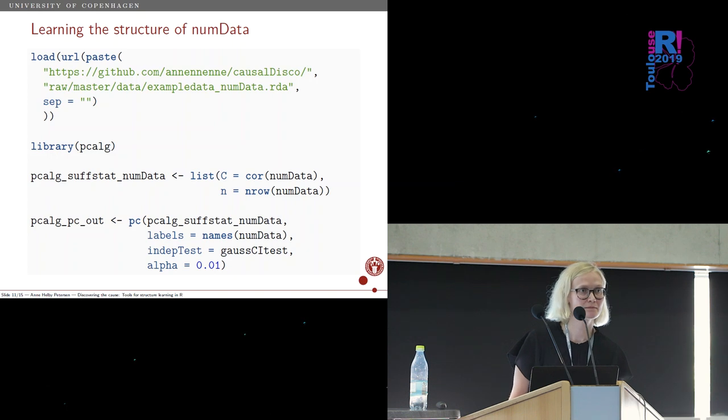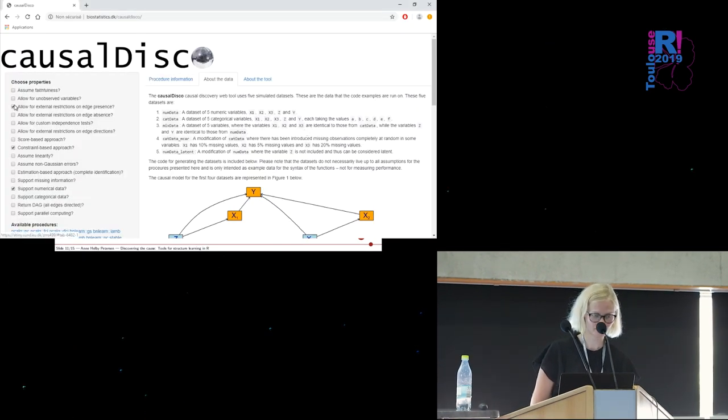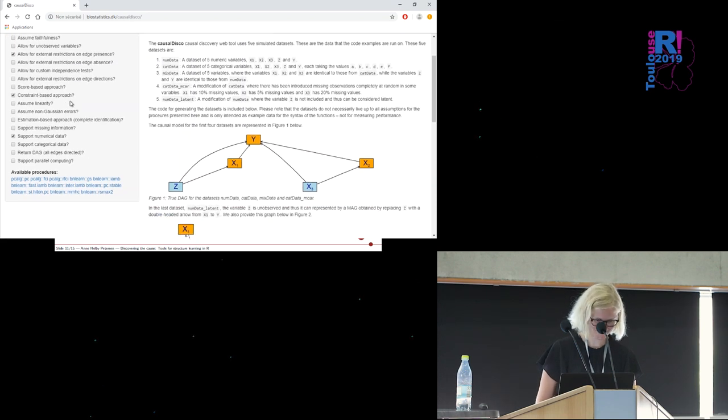And is it possible to add some expert knowledge, for instance, like in saying that this relationship is in that way? Yeah. So if you go to the causal disco, you can try to allow for external restriction of edge presence. That is, you say that this has to be there. You can also say that you need to have edge absence or the direction. Some of the methods implement that and some of them don't. In this specific implementation of the PC algorithm, it's difficult to have the directions. But there are other ones where it's easier. I think maybe in the bnlearn package it is possible. Should be possible in PC as well. You can do it post-hoc. That's the backside of having your own implementation—you forget what other implementations can do.